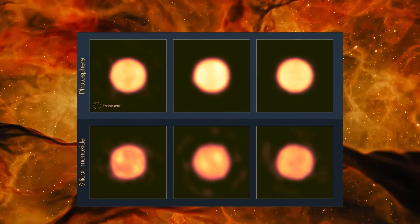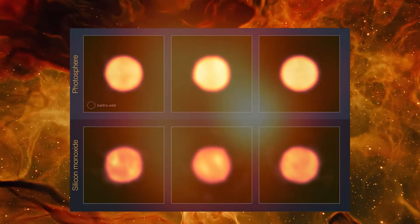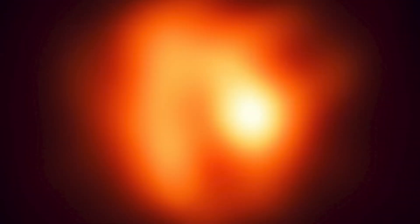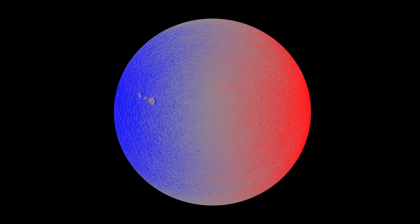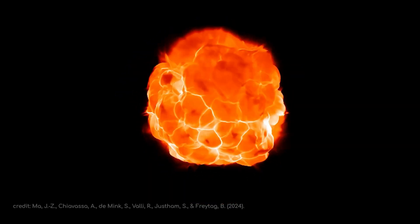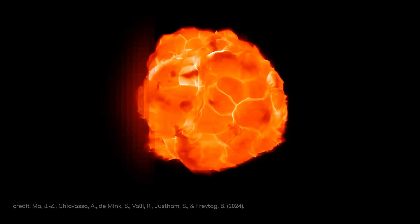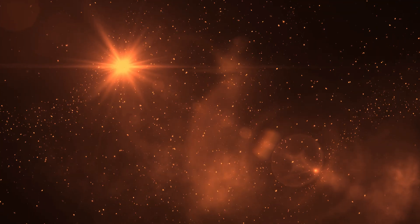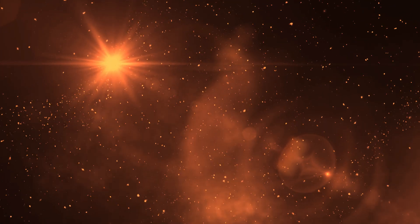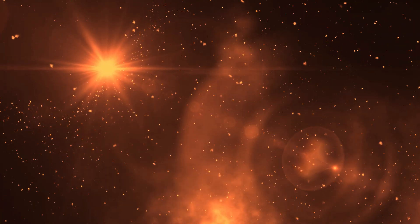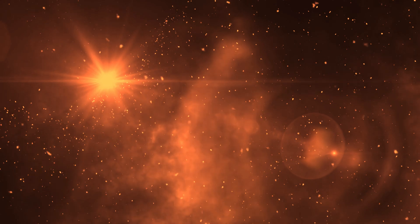Like all supergiants, Betelgeuse lives a much shorter life than stars like our Sun, due to the intense burning of fuel in its core. When the fusion reactions are exhausted, gravitational collapse will give rise to a cosmic explosion of extraordinary proportions that will not only light up the sky impressively, but also disperse heavy elements throughout space, contributing to the creation of new generations of stars and planets.